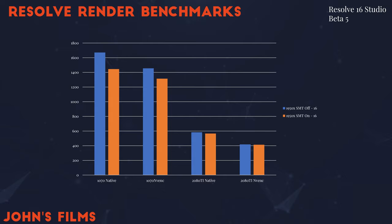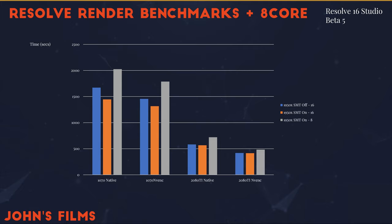As Resolve has matured, it's taken greater steps to use graphics processing hardware. As a fun test, I turned off eight cores in my processor, and the gray bar you see now in our benchmark shows that it's only about a 25% increase in the amount of time required to render in both native and NV-ENC hardware encoding, with half of the cores in place. This gives us quite a good reason to think hard and long about what we're going to put in our next computer.